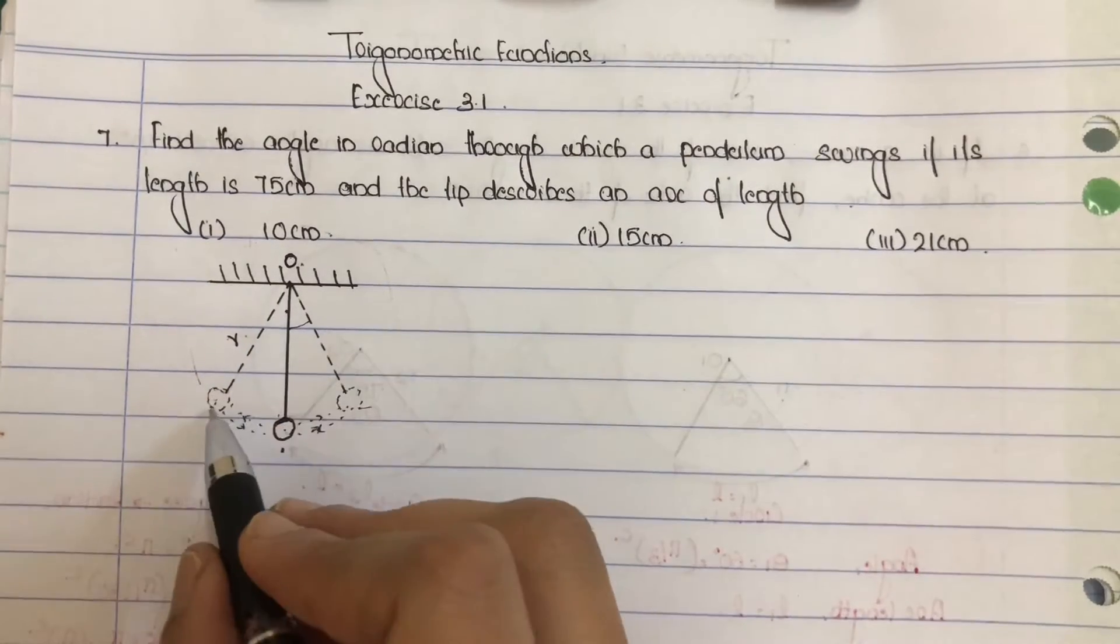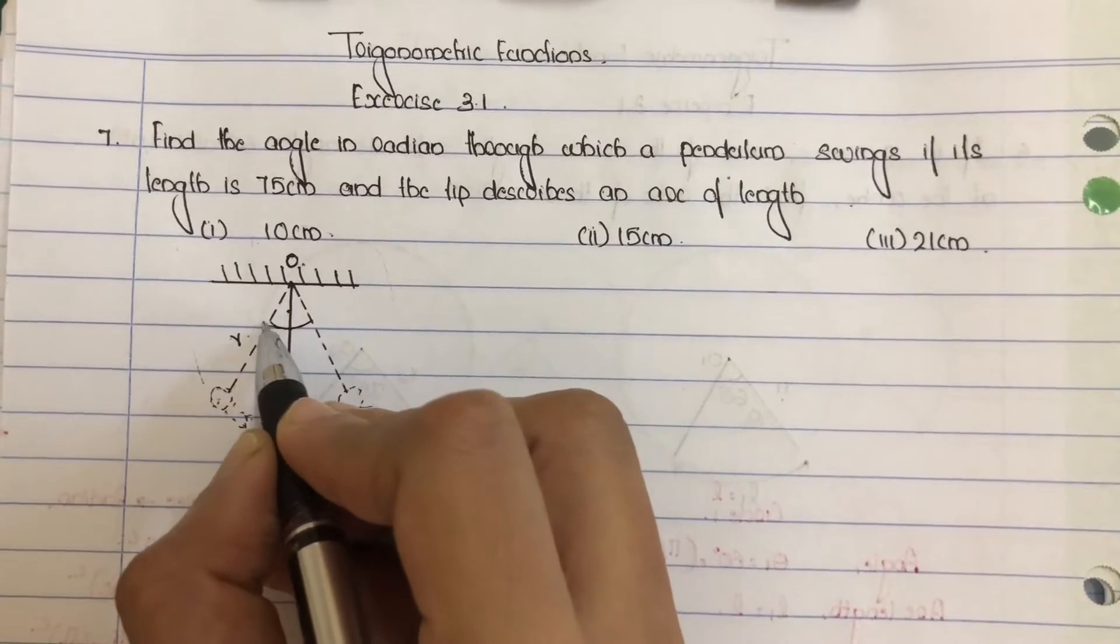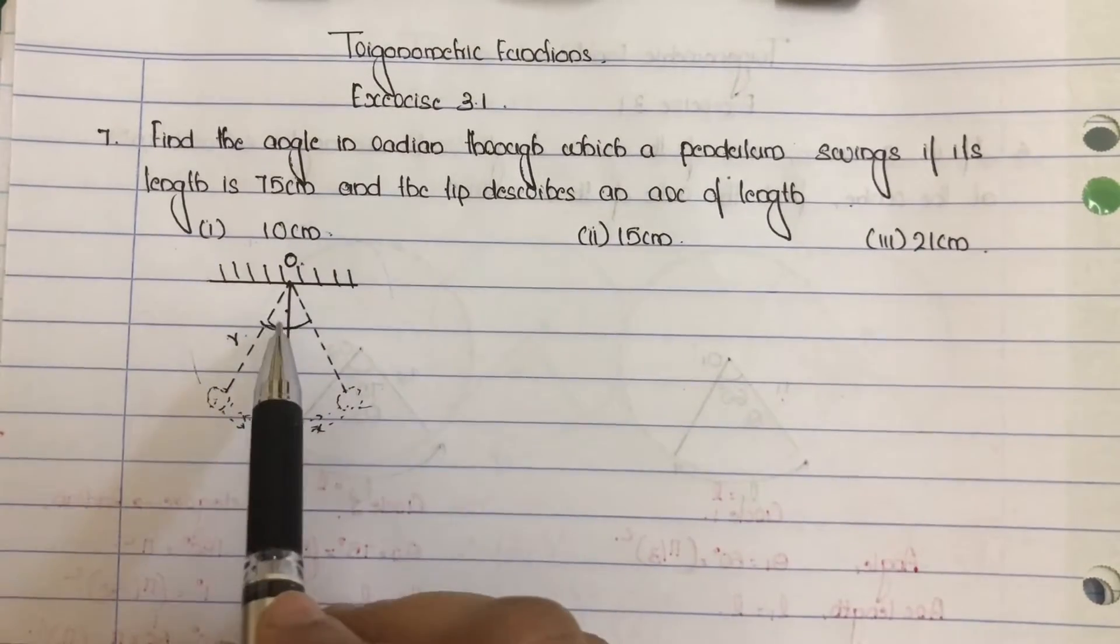Then bob swings and the answer is a certain angle at the center of the circle. That angle we find out.